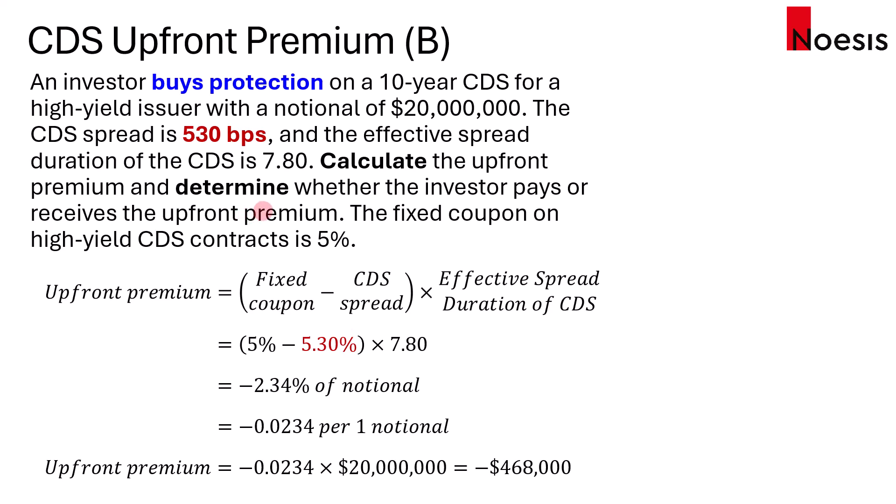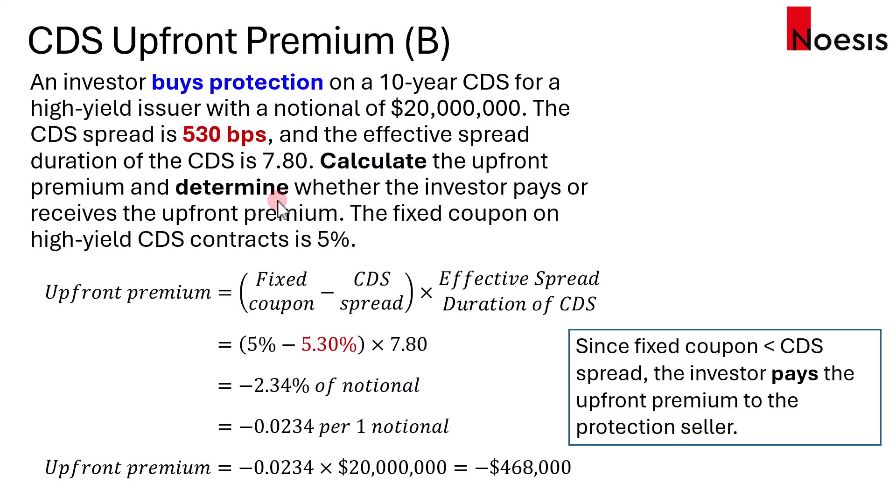Because the CDS spread is higher, the investor only has to pay 5%. It's a good deal because you're paying a 5% premium throughout the life of the contract while the CDS spread at initiation is 5.3% — you're paying a lower premium than the risk you're hedging against. So for the seller, it's imbalanced. To make it fair for the protection seller, the protection buyer or investor would have to pay the upfront premium to the protection seller.